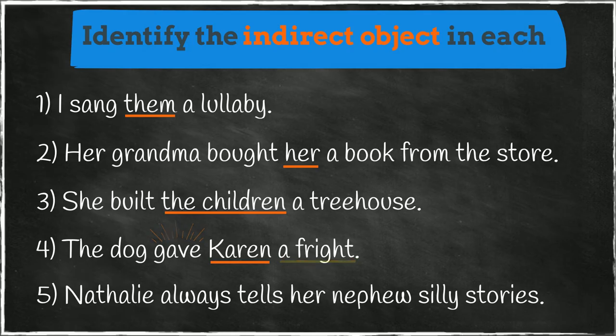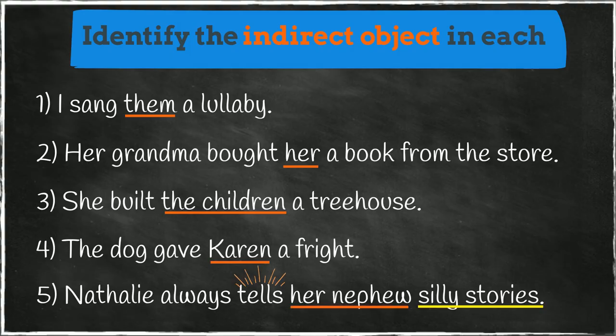Last one. Natalie tells what? Silly stories. Silly stories is the direct object. Who receives them? Her nephew. Her nephew is the indirect object.